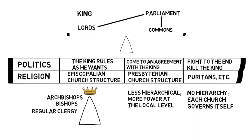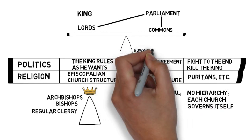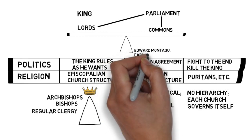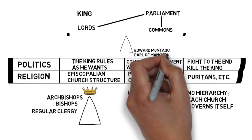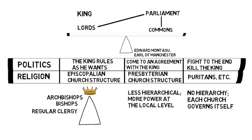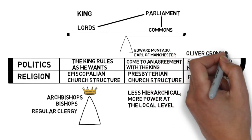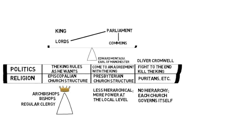The Puritans wanted each church to govern itself. Heading the more moderate faction of the parliament was Edward Montague, the Earl of Manchester, and heading the more extreme faction was Oliver Cromwell. At the beginning of the conflict, Montague was calling the shots — he was the person in power.